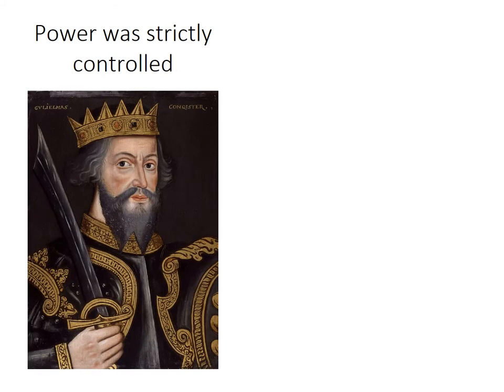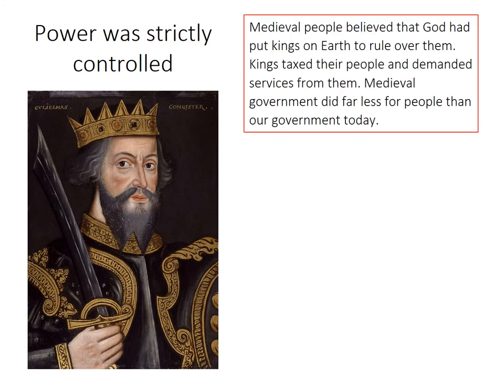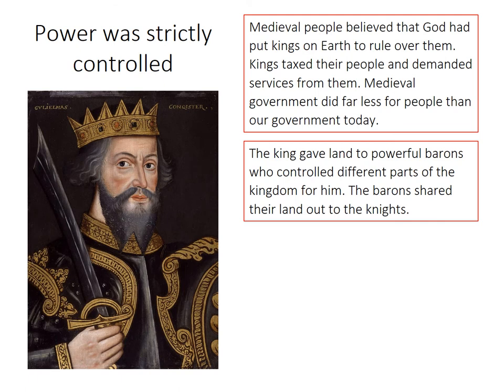Power was also strictly controlled in the Middle Ages. At the top of the power structure and hierarchy was the king, and medieval people believed that God had put kings on earth to rule over them. Kings taxed their people and demanded services from them. The medieval government was not democratic — it was the king and his advisers, who did far less for people than the government we are used to today. Under the king were the barons — powerful people who controlled different parts of the kingdom for the king.